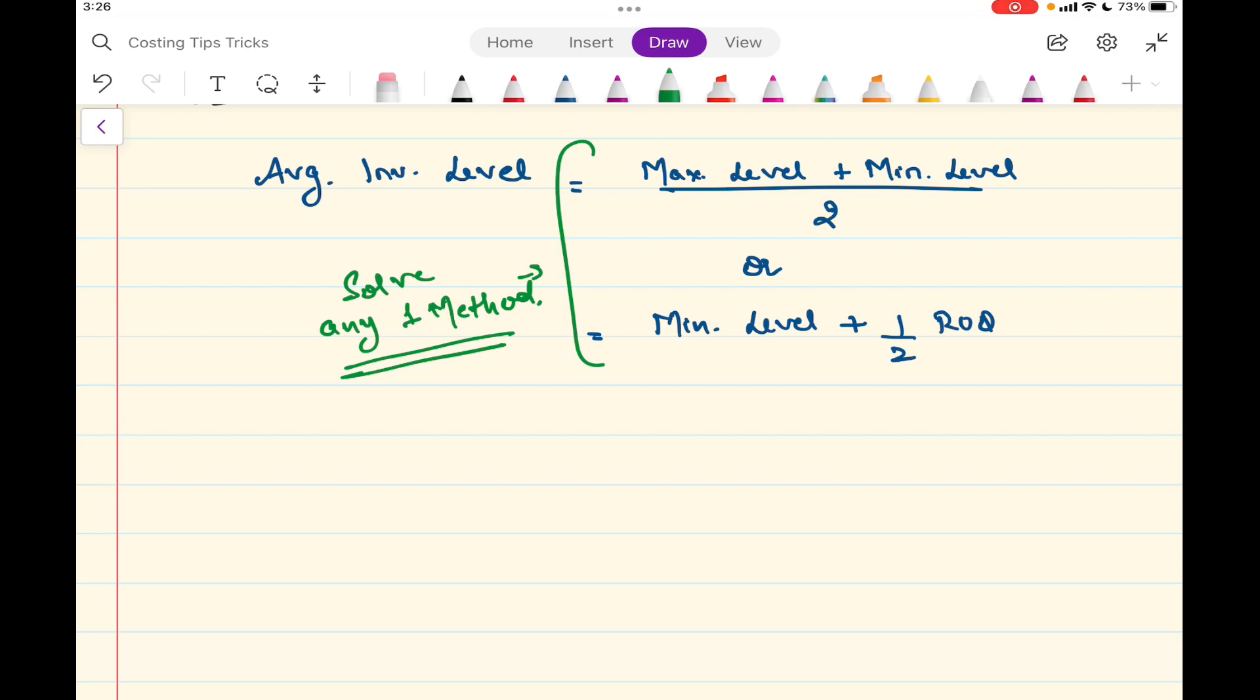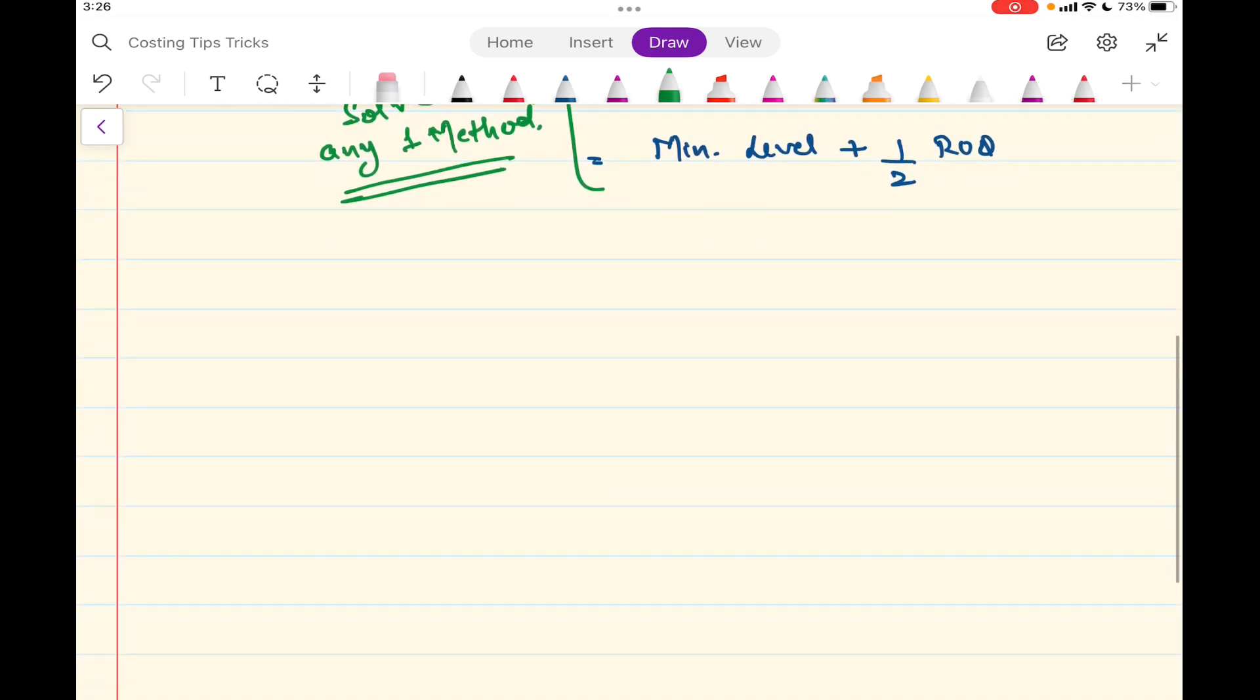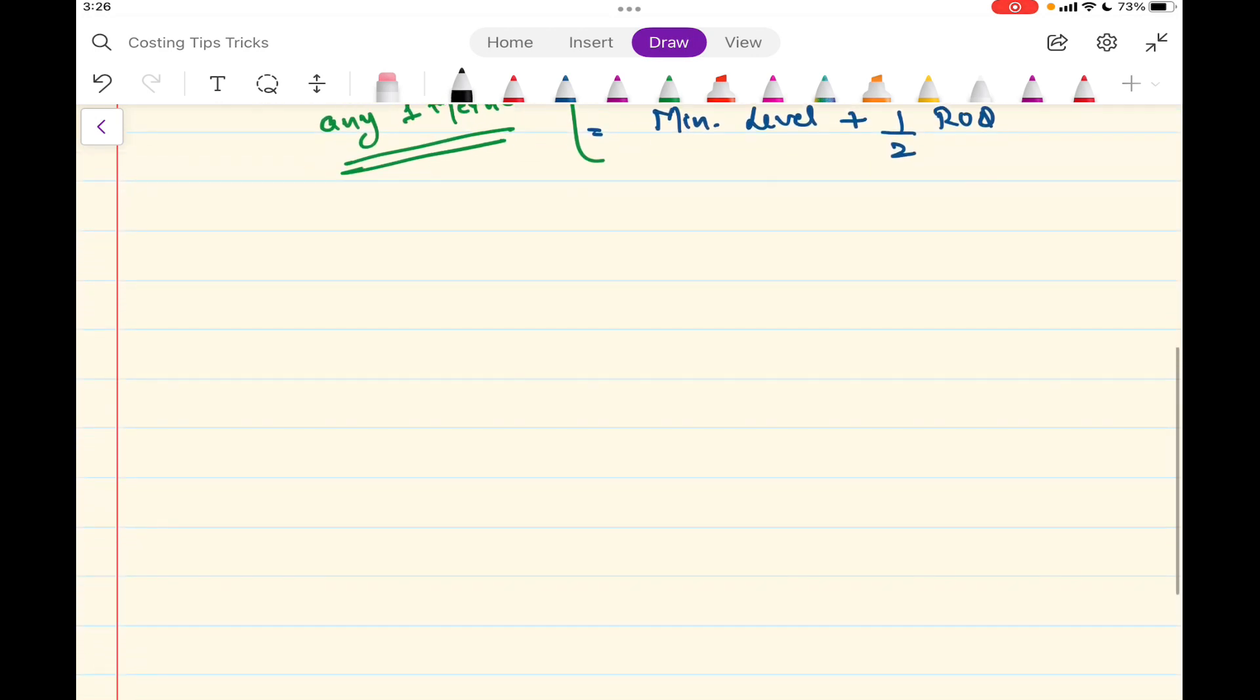So this was the first tip. Now coming to the second tip, Tip 2. This is related to valuation of purchase price of raw material.